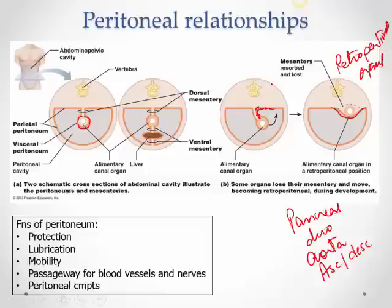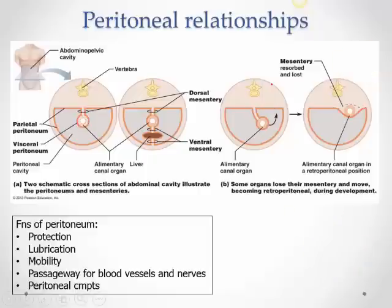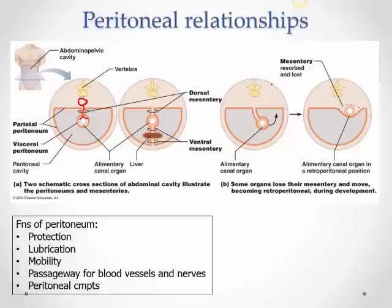The functions of the peritoneum are similar to any serous cavity: it is protective and provides lubrication through serous fluid. The mesentery allows for organ mobility, and also serves as a passageway for blood vessels, nerves, and lymphatics from the aorta. The presence of mesentery divides the peritoneal cavity into compartments, which helps localize infection.